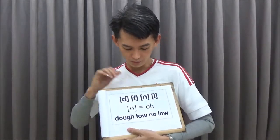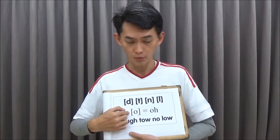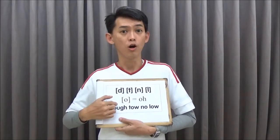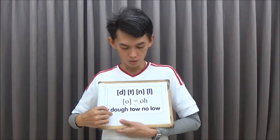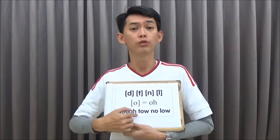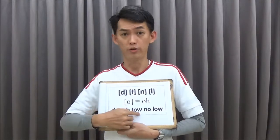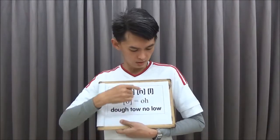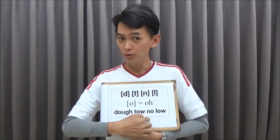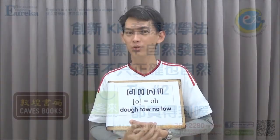And if we change the vowel to O, we have D + O = 'dough', T + O = 'toe', N + O = 'no', and L + O = 'low'. I hope you like it.